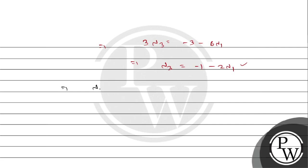This implies lambda-1, lambda-2, lambda-3 are all expressible in terms of lambda-1. Lambda-2 equals 3 minus 2*lambda-1, and lambda-3 equals minus 1 minus 2*lambda-1. We can express all lambdas in terms of lambda-1.